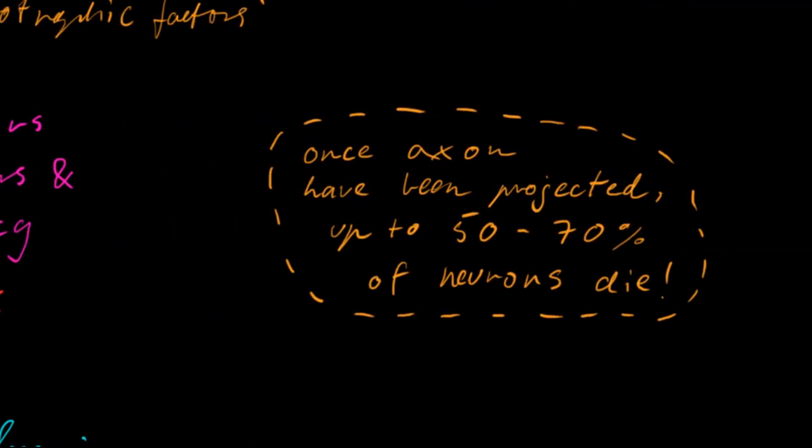So, a quick note here which I thought was really astonishing and perplexing. Once axons have projected, up to 50 to 70% of axons die.